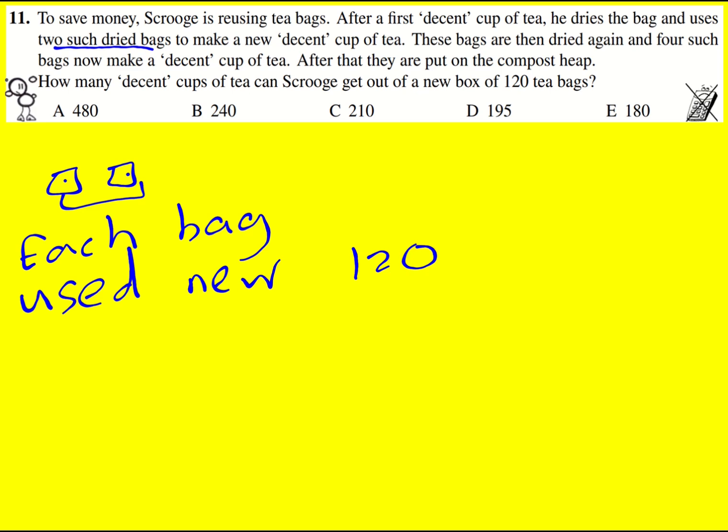Then if he dries the bags and using two such dried bags, then we can use these 120, but now they're going to be in 60 pairs of two, and so that's going to give 60 cups of tea the second time around.